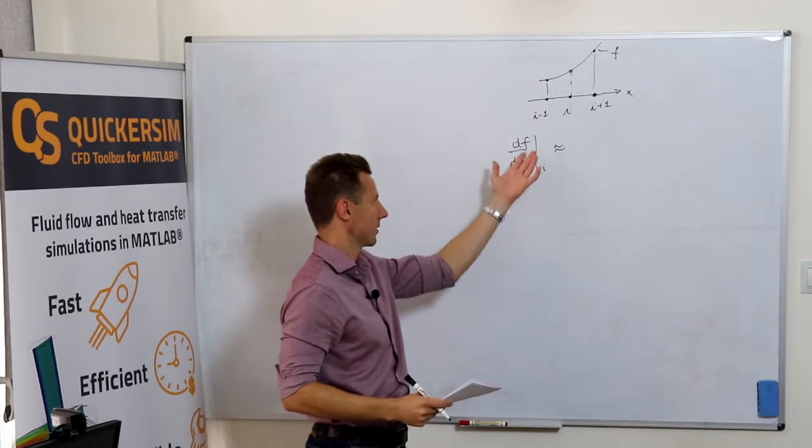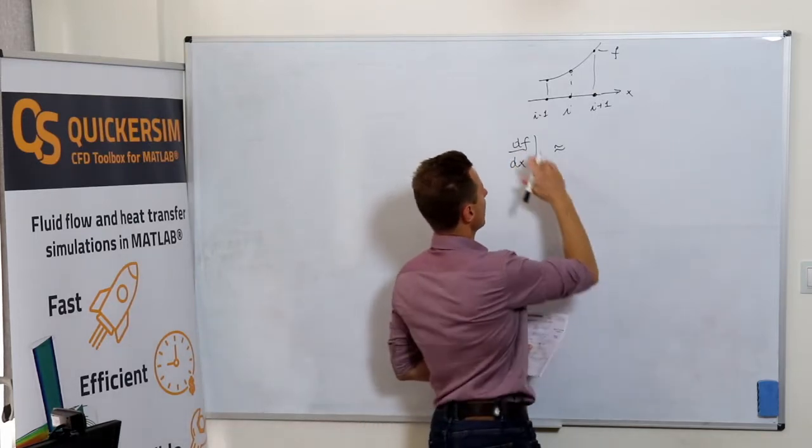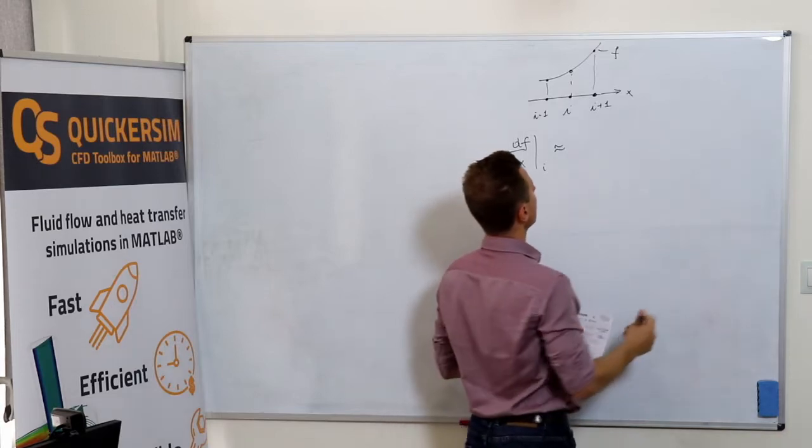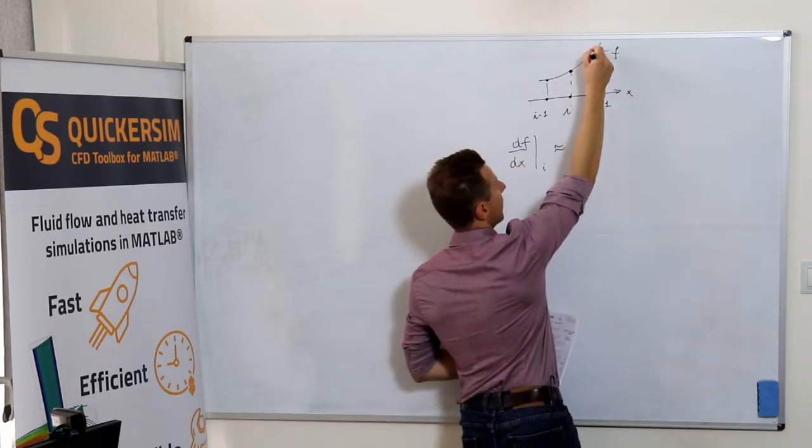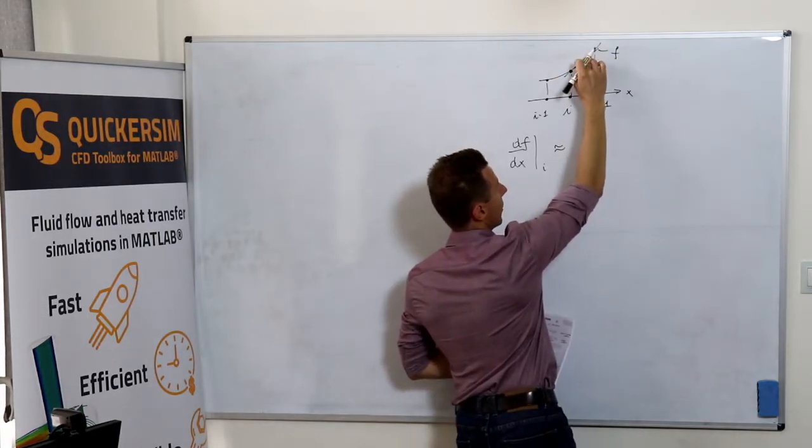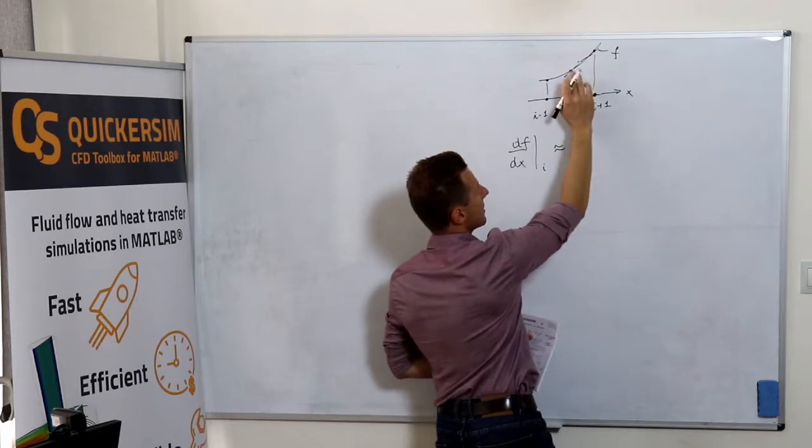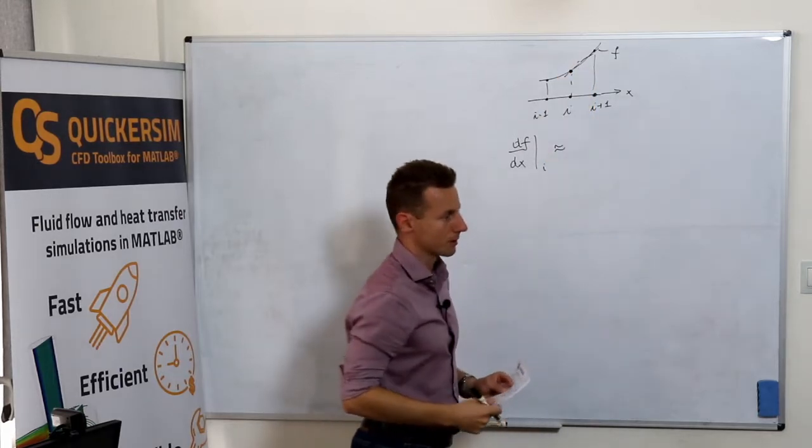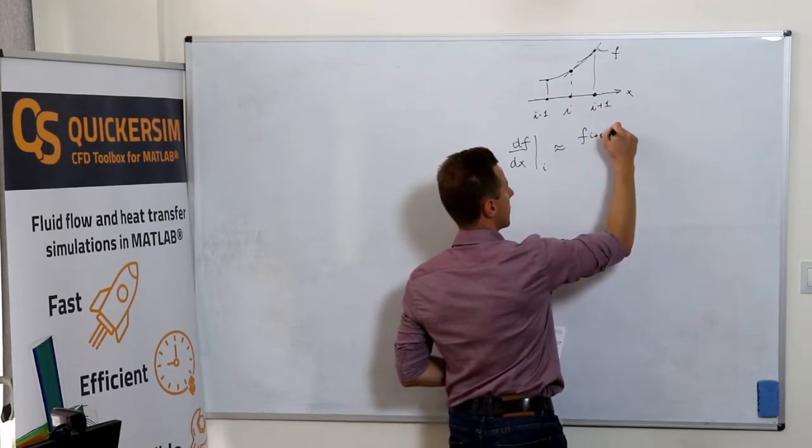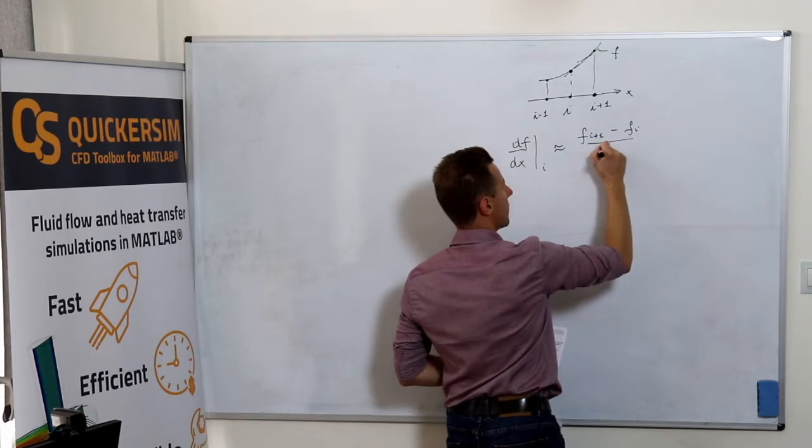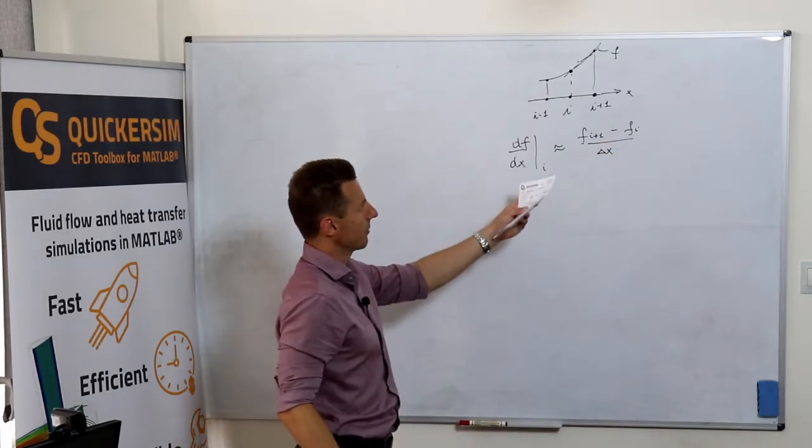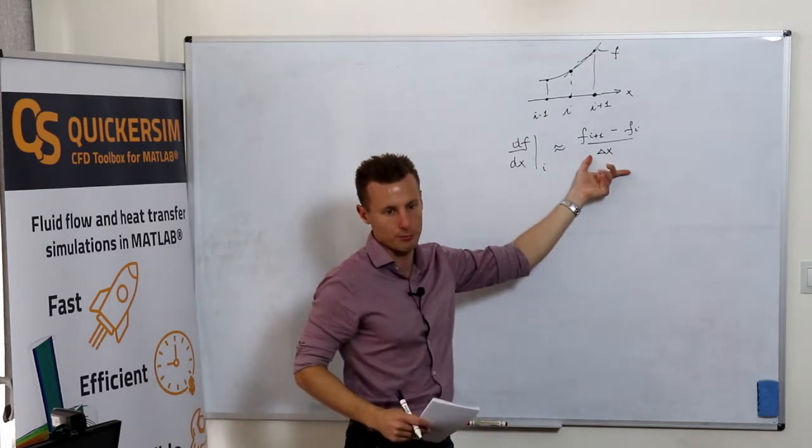Without derivation, it's probably pretty easy to guess. The first derivative is the slope, so you can use this value and that value to calculate the slope of the function and say this is some approximation of the slope at this point. What we can write is f_{i+1} minus f_i divided by delta X. This is called the forward difference.